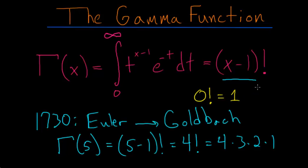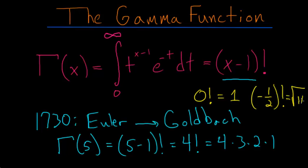And even more striking is that minus one-half factorial is equal to the square root of pi. So in this video, I'd like to show to you exactly why the gamma function is equal to the factorial function.